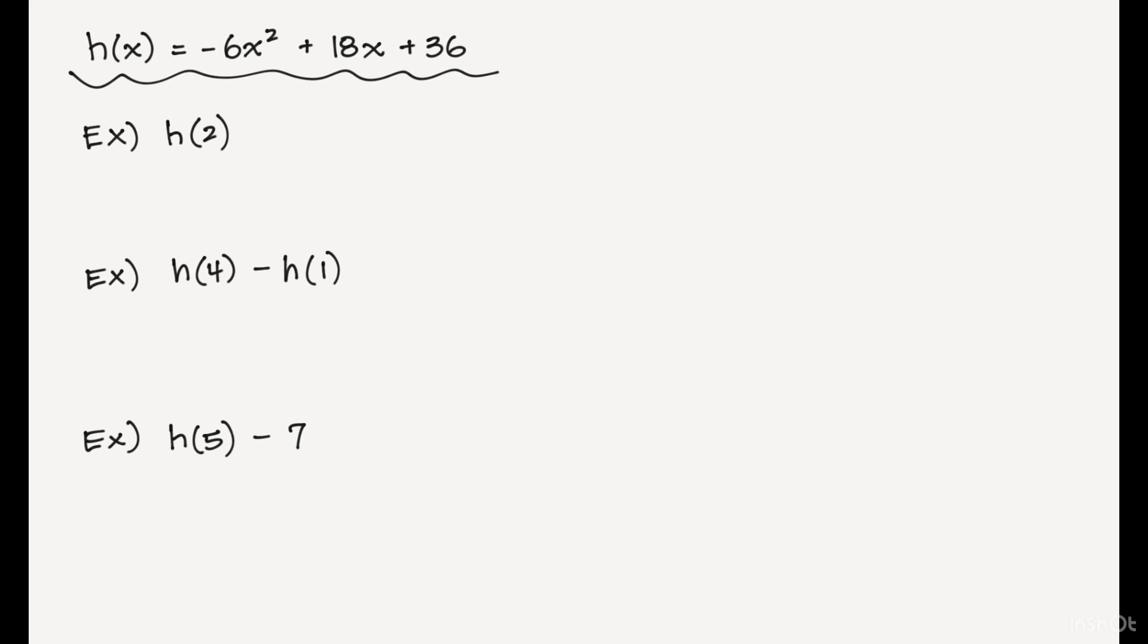We're just going to look at one function. It's called h of x, and it's equal to negative 6x squared plus 18x plus 36. We're going to do some work based off of this function. The first thing we're going to do is find out the function when I plug in 2. So negative 6 times 2 squared plus 18 times 2 plus 36. Let's simplify. That's negative 6 times 4 plus 36 plus 36, and that's negative 24 plus 36 plus 36, which is 12 plus 36, which equals 48. So the function h when I plug in 2 is equal to 48.